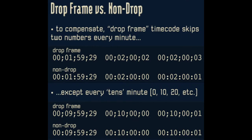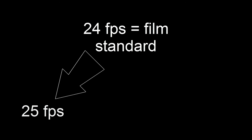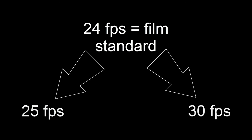Now the reason I brought all this up is that there are standards for dropping certain frames, notably with 30 frames per second versus 29.97 frames per second — I'll put a link in the description. There are also standards for converting 24 frames per second, the standard for films and movies, to 25 frames per second and 30 frames per second.